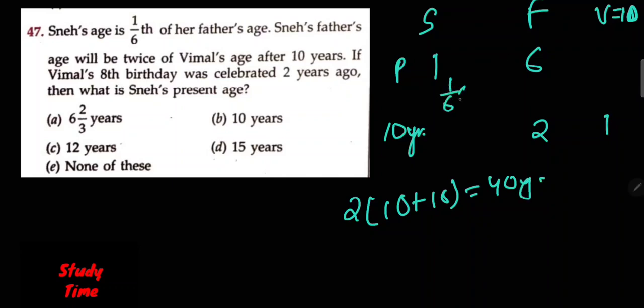1/6 times 40 equals 20/3, which is 6 and 2/3 years. The answer is option A.